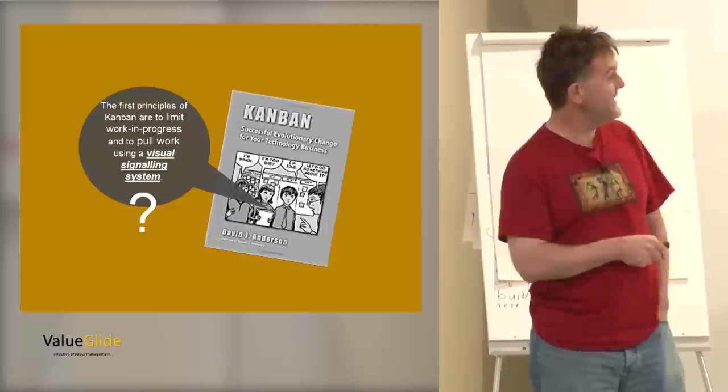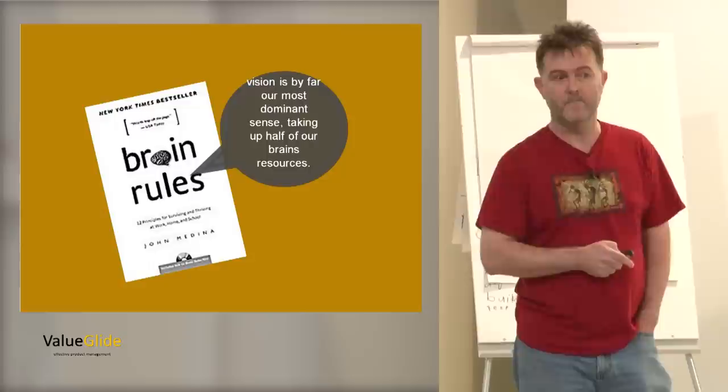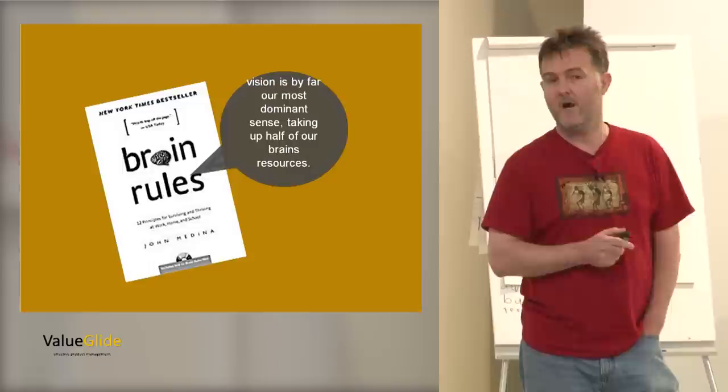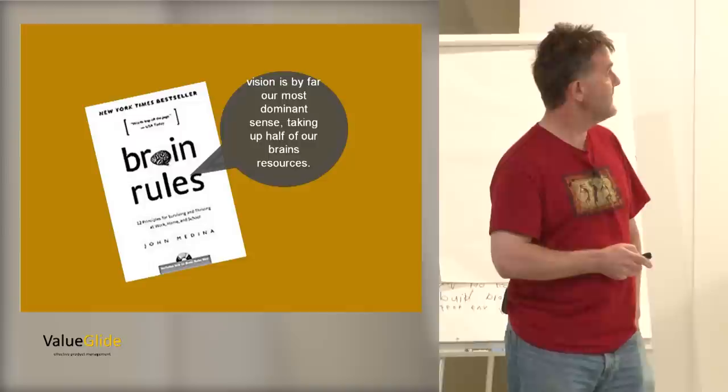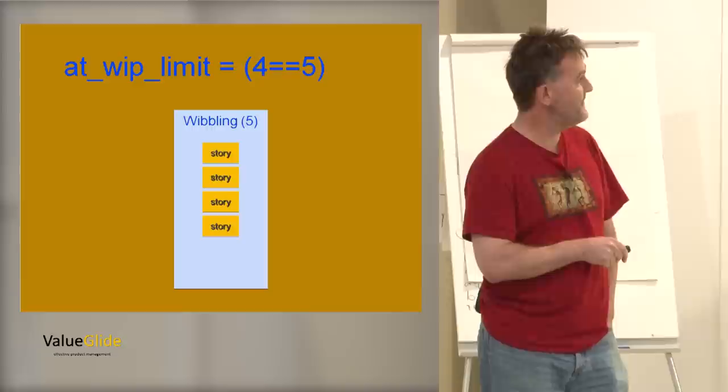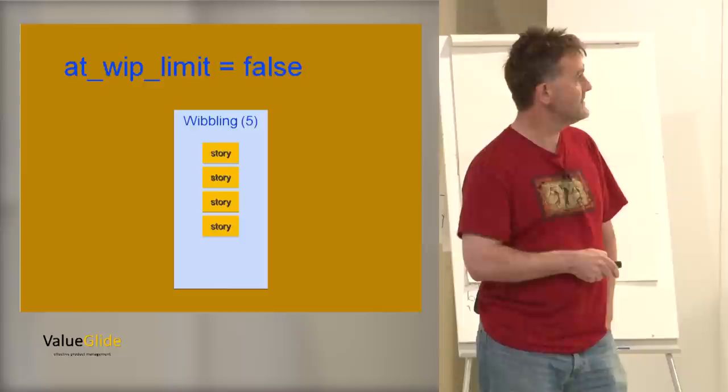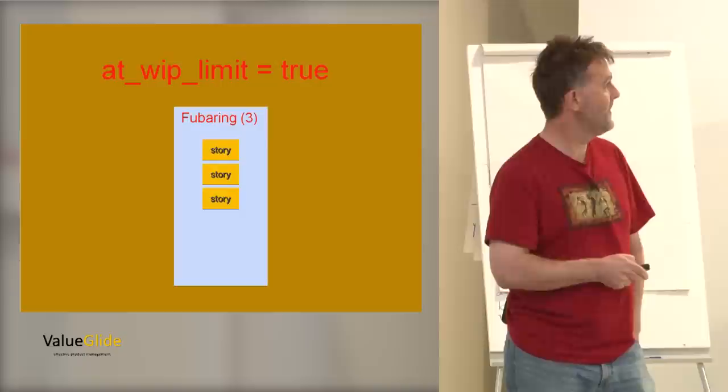So having done that, we've satisfied the first criteria. We now have work in progress limits. But have we got a pull system? And what's this other bit after that in his book where he says a pull system using visual signaling system? Pull work using a visual signaling system. What's this visual stuff? I think it's important. I think the visual aspect of it is very, very important. Here's a quote from a book that's one of my favorite books by John Medina. Vision is by far our most dominant sense, taking half of our brain's resources.